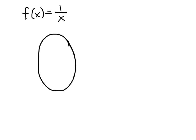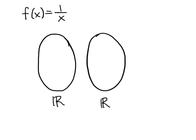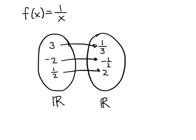The typical situation would be to say the domain is the set of real numbers and the co-domain is the set of real numbers. For a while, it looks like this works: plug in 3, we get 1/3; plug in negative 2, we get negative 1/2; plug in 1/2, we get 2. But when we try to plug in 0, we get a problem — 1 divided by 0 is not defined. That means in the left-hand bubble, the number 0 does not have an arrow coming out of it, so this isn't a function.